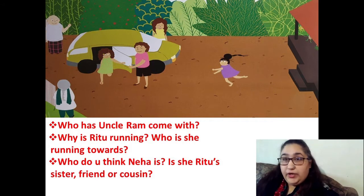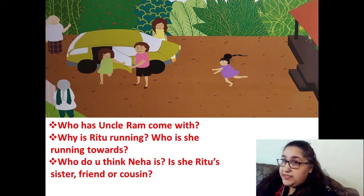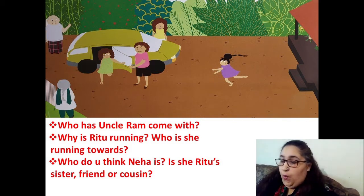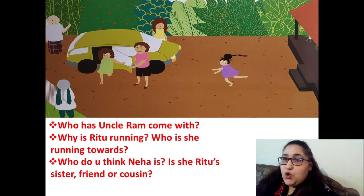Moving to the next page — look at the picture carefully. Who has Uncle Ram come with? Uncle Ram has come to visit, and Uncle Ram has brought someone. Who has come with Uncle Ram? Answer. Next question: why is Ritu running? You can see in this picture Ritu in the purple dress is running. Why is she running?